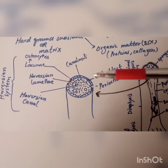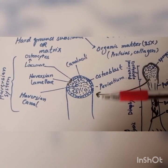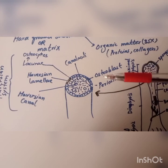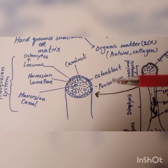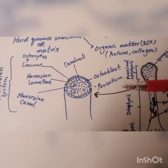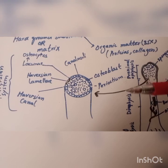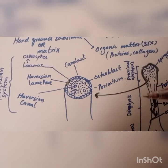Below the periosteum, there is a layer of cells that is known as osteoblasts. The osteoblast cells are bone forming cells that help to increase the thickness of bone as well as repairing of broken or damaged bones.